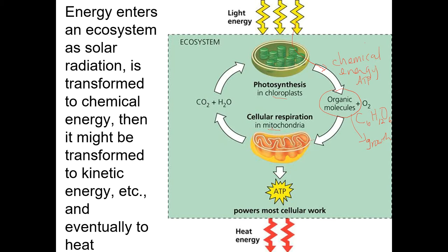That chemical energy — whether ATP made directly by photosynthesis or transformed from organic molecules — is used to do cellular work like mechanical work, such as walking around. Eventually that energy is lost as heat. The original light energy isn't destroyed, it's just converted from light to chemical to mechanical to heat energy, but heat is not very useful because it's spread out through the environment and can't do further work.